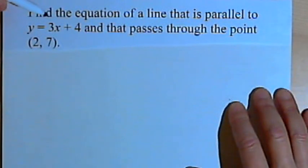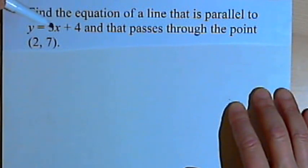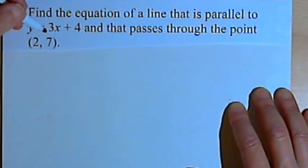Let's say that I'm told to find the equation of a line that is parallel to y equals 3x plus 4 and it passes through the point (2, 7). Now a couple of things I want to remember. When lines are parallel, they have the same slope.